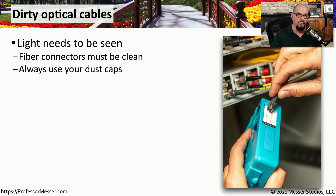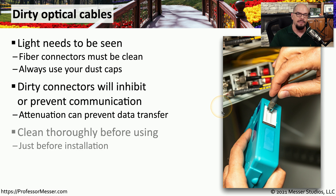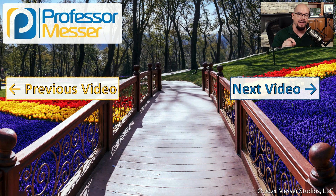If you're using fiber, which relies on light being sent over a connection, you need to make sure the connectors are not dirty. When you first receive the fiber, you'll notice there are dust caps over the end of the connection. When you plug it into your device, you may want to clean it first with a fiber cleaner and then connect it to the device. This will remove any dirt and limit the amount of attenuation. You can use external alcohol swabs or a dedicated cleaning device where you simply plug in the fiber connection to keep that connector clean.